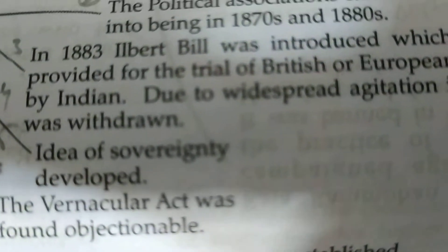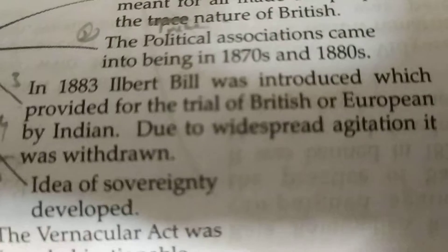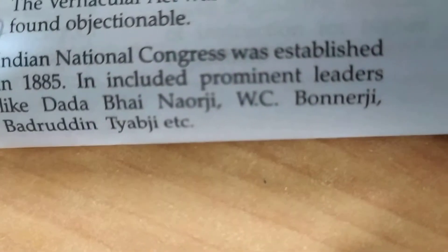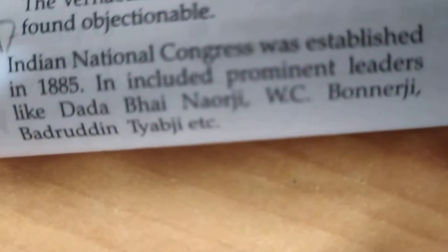The Ilbert Bill of 1873 was introduced, which provided that Indian petitioners against Europeans could be tried by Indian judges. But due to opposition, it was withdrawn, and people became furious — it was seen as total racial discrimination against Indians. As a result, the need for an all-India organization was felt.